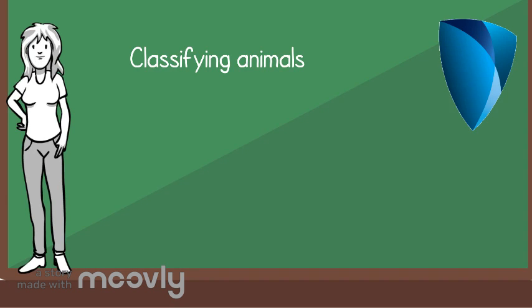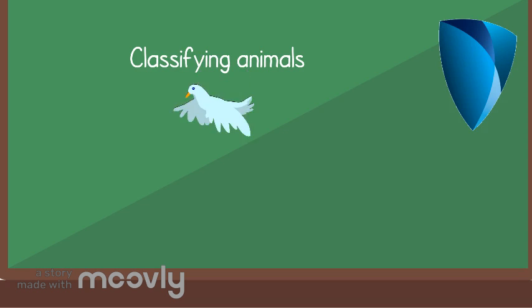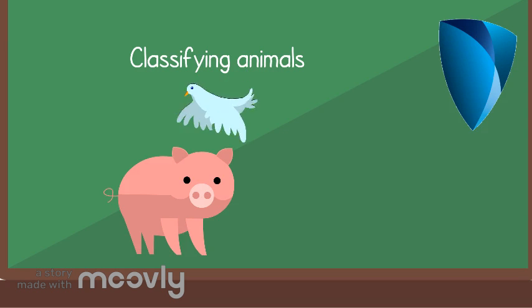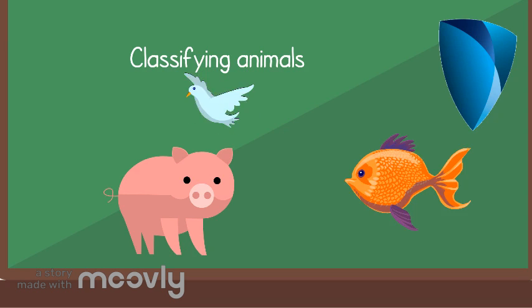Classifying animals. Animals are living things. There are many different animals: air, plant, and aquatic or water animals.